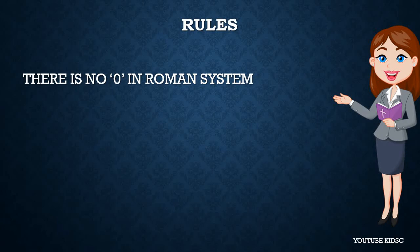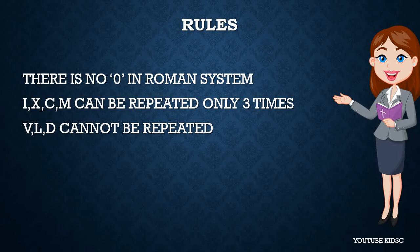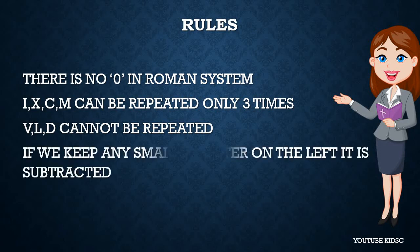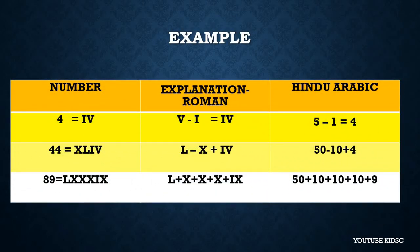There is no zero in the Roman system. I, X, C, M can be repeated only three times. V, L, D cannot be repeated. If we keep any smaller letter on the left it means subtracted, and if we keep any letter on the right it means we are adding it.